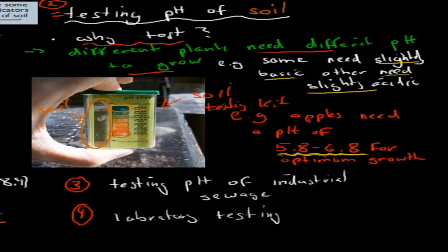Now the third one, testing pH of industrial sewage. Now the reason why you do this, if you have industry, you often use lots of bases and acids to make different products. And the problem is the sewage will go into the water supply. And if the sewage you remove is too acidic or too basic, that could kill life in the ocean. So before you actually remove your industrial sewage, you're going to have to test your pH. And you don't want to put anything which is too acidic or basic into water.